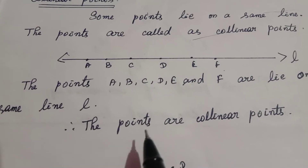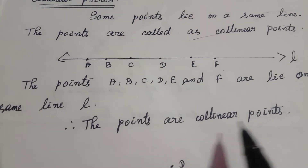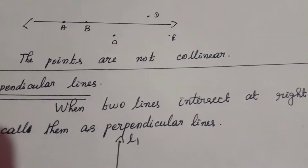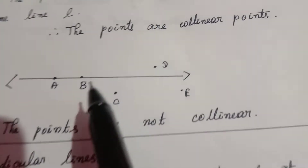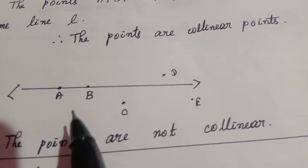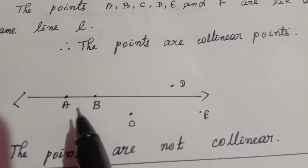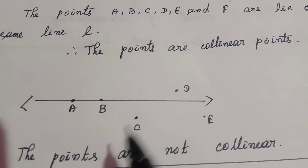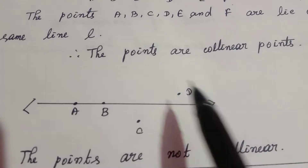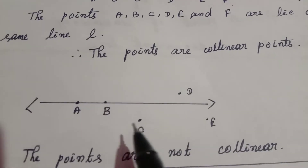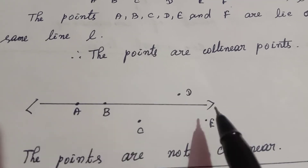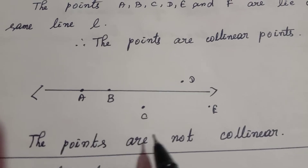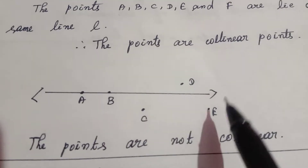Next, here A and B lie on the same line, but C, D, and E are not on the line. So these points are not collinear.